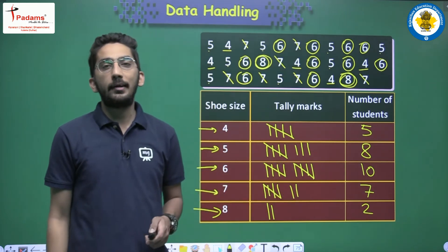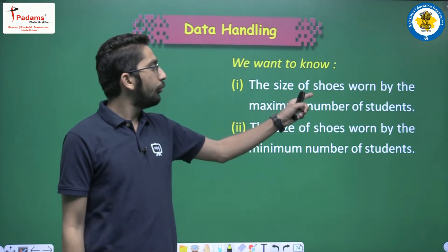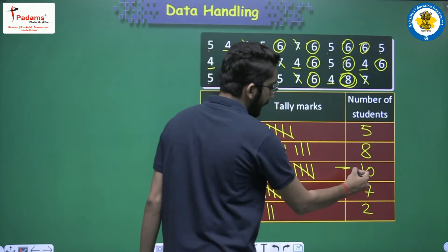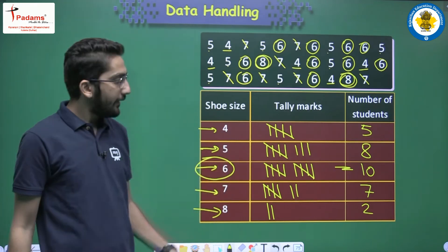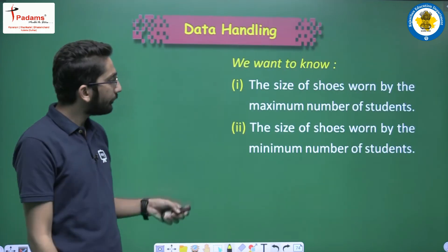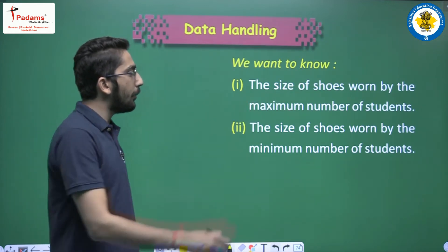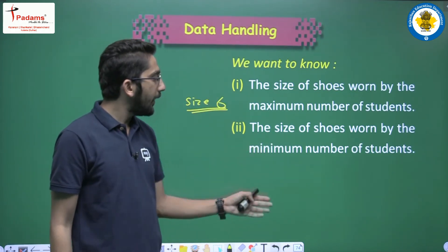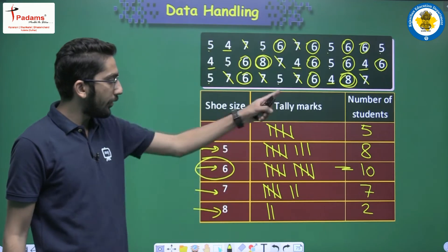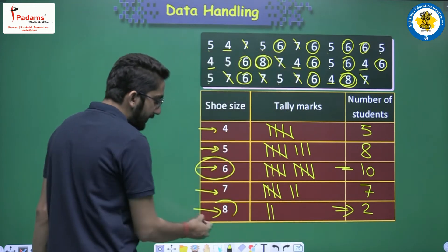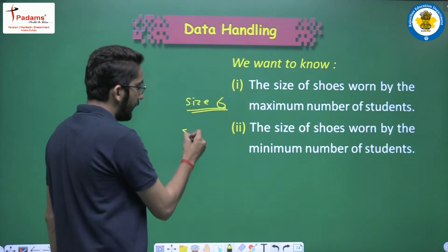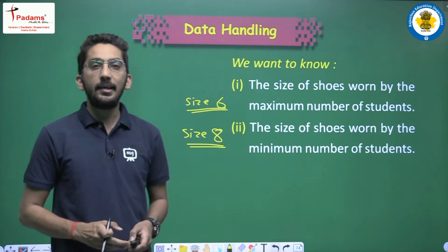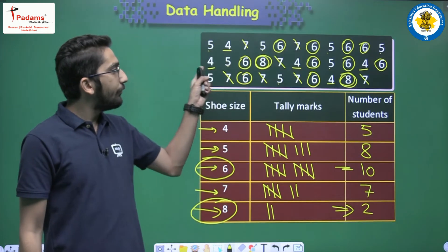Now we answer the questions. The size of shoes worn by the maximum number of students: looking at the table, the maximum is 10 students, so shoe size 6 is the answer. The size of shoes worn by the minimum number of students: minimum is 2 students, so the answer is shoe size 8. This is how we convert given information into tally marks and then answer questions.